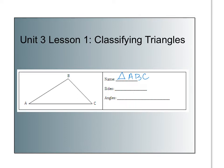Now the sides of this triangle are segments. One side we could call side AB, or segment AB. This side over here, side BC, is segment BC. And the third side is segment AC. You could switch that around and call it segment CA, but most of the time mathematicians will put the letters alphabetically.